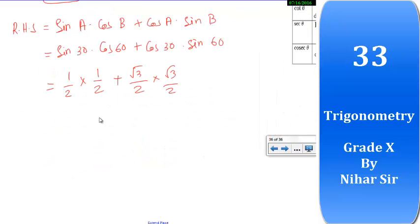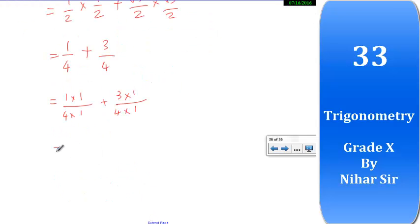Let's go ahead, so it will be 1 upon 4 plus 3 upon 4. Now taking LCM, it will be 1 plus 3 upon 4, so it will be 4 upon 4 and that's 1, that's 1 equals LHS.